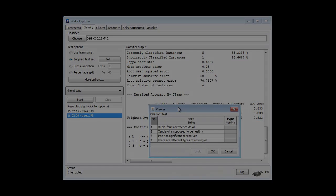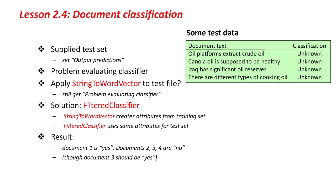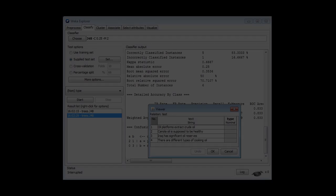Now I've got to do something different. That's where the filtered classifier comes in. There's a problem evaluating the classifier — we can't simply apply string-to-word-vector to the test file. The solution is the filtered classifier. As we saw previously, the filtered classifier will create a filter from the training set and use it for the test set. That's exactly what we're going to do here.